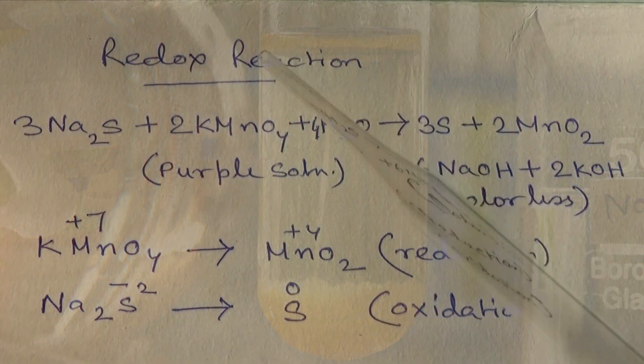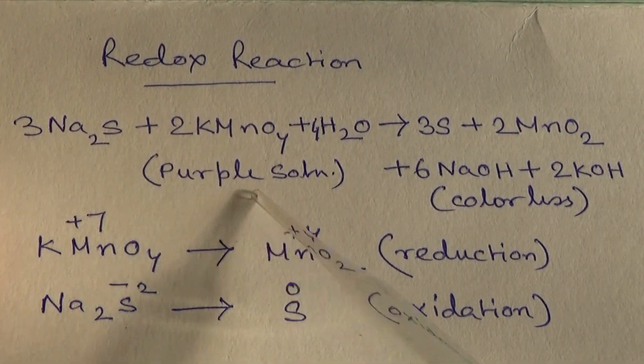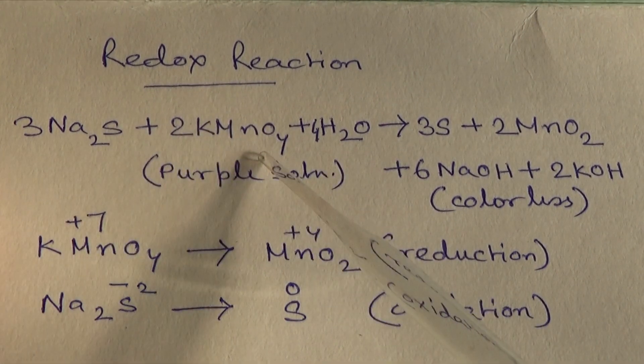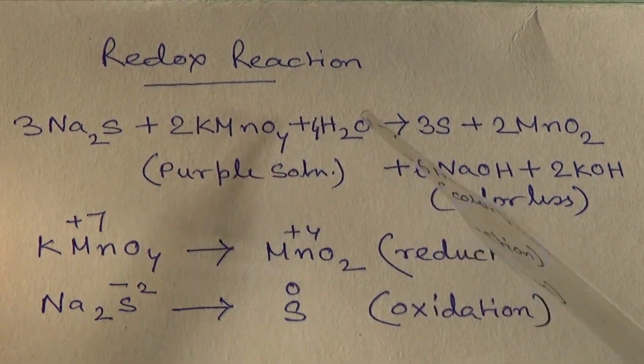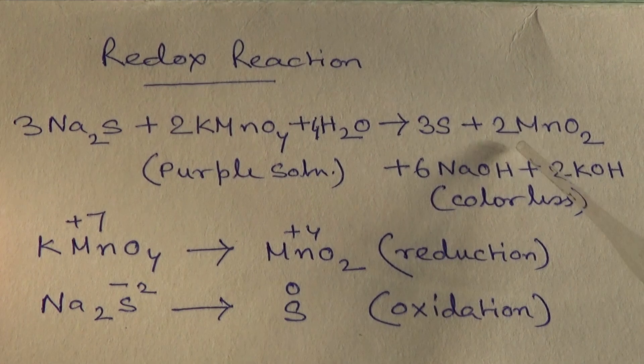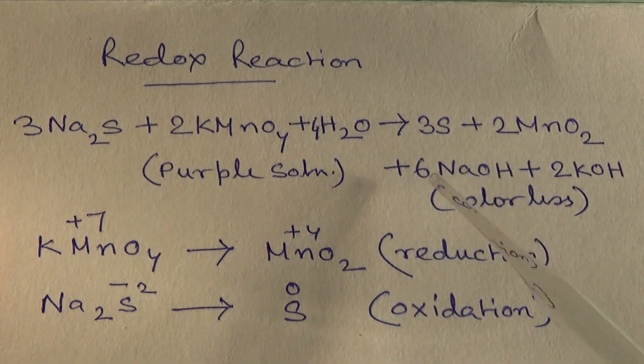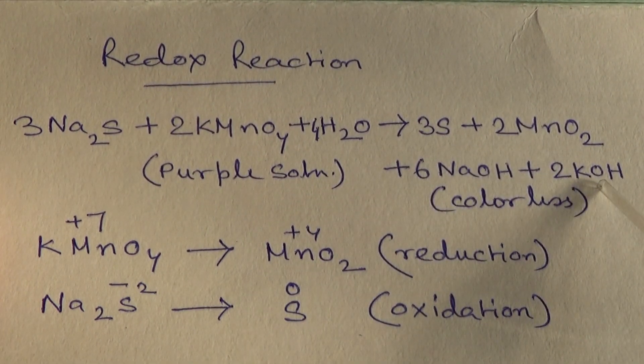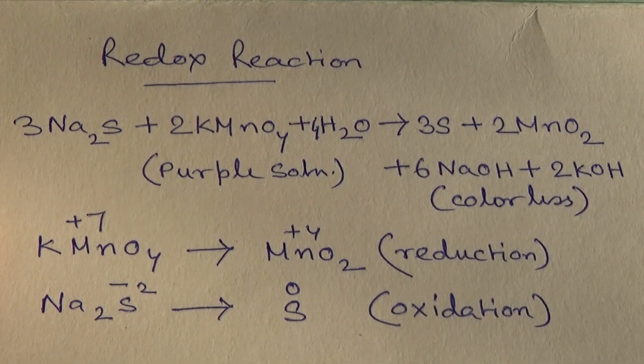So in this reaction, sodium sulphide reacts with purple solution of potassium permanganate to produce a yellow precipitate of sulphur along with manganese dioxide, sodium hydroxide, and potassium hydroxide.